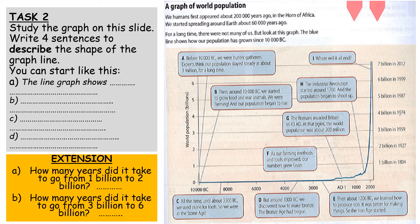Write four sentences about this graph. Your extension is to work out how many years it took to go from one billion to two billion — we know it went from 1804 to 1927, so can you work out how many years that is? And then work out how many years it took to go from three billion to six billion. Hopefully you'll see that population has started to increase much more rapidly in more recent times.